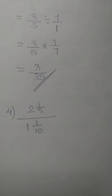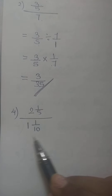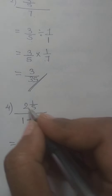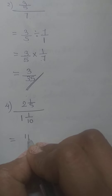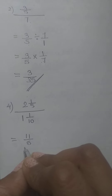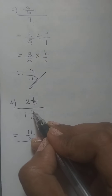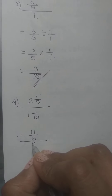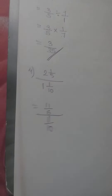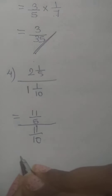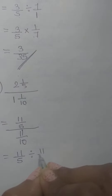We will try to solve this sum. The numerator and denominator are both in mixed fraction form. We have to convert both into improper fractions. For the numerator: 5 twos are 10, 10 plus 1 is 11, so we get 11 by 5. For the denominator: 10 ones are 10, 10 plus 1 is 11, so we get 11 by 10. Now we write 11 by 5 divided by 11 by 10.